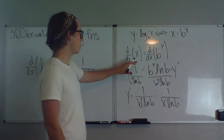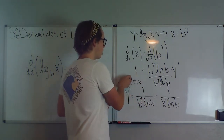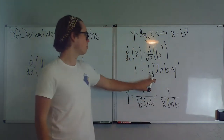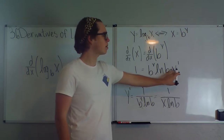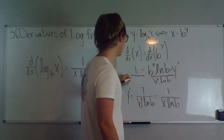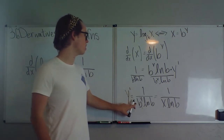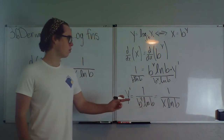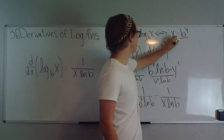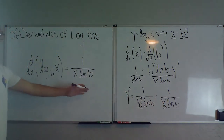So we have x equals b to the y, and we differentiate term by term. The derivative of x is 1, and the derivative of b to the y is b to the y times ln b times y prime. We solve for y prime by dividing out b to the y times ln b on both sides, giving y prime equals 1 over b to the y times ln b. Since b to the y equals x, this becomes 1 over x ln b, which proves our statement.